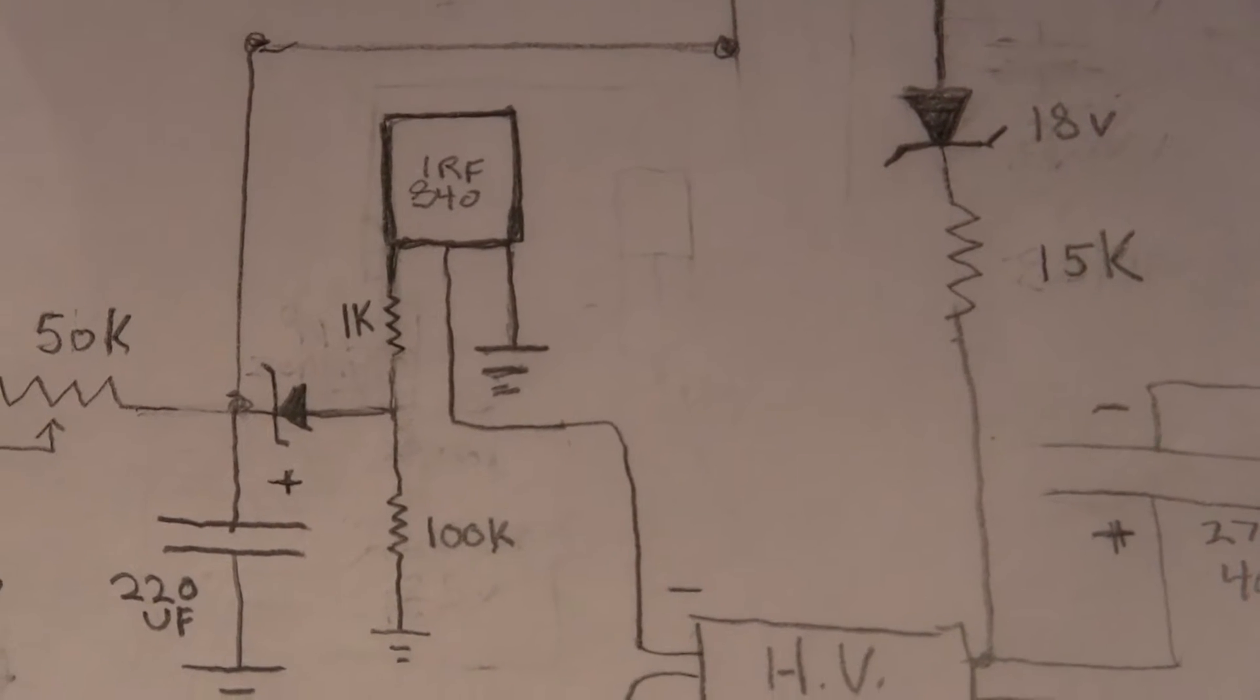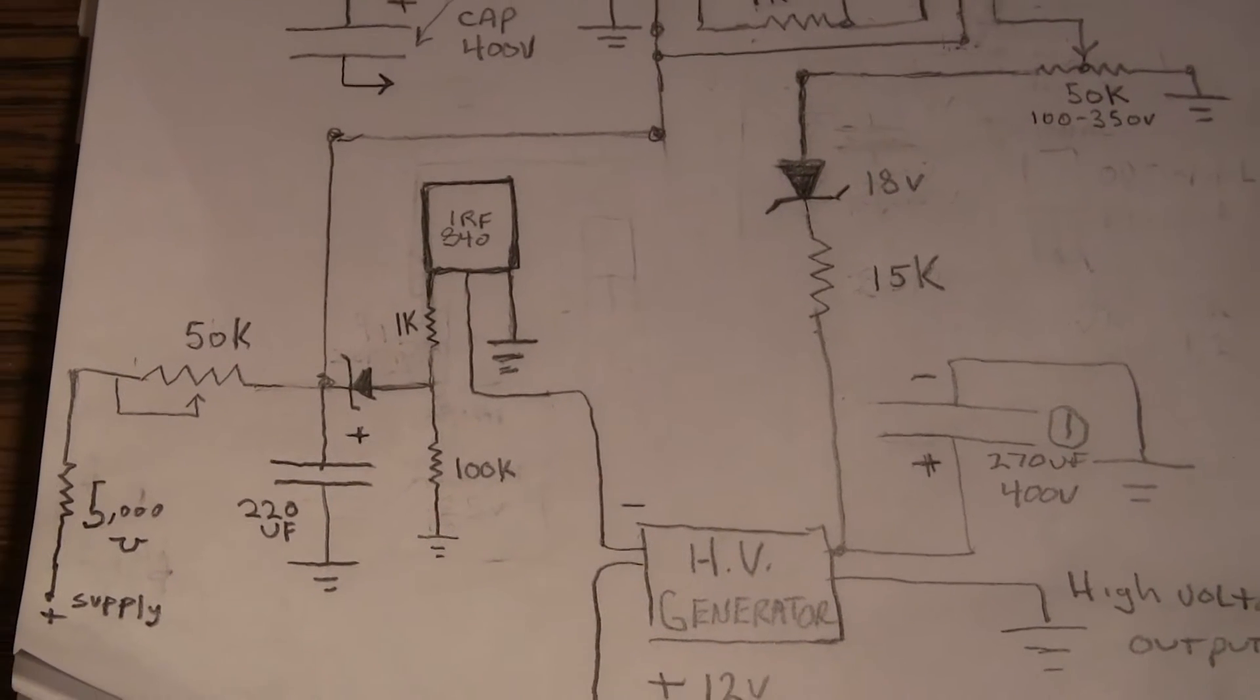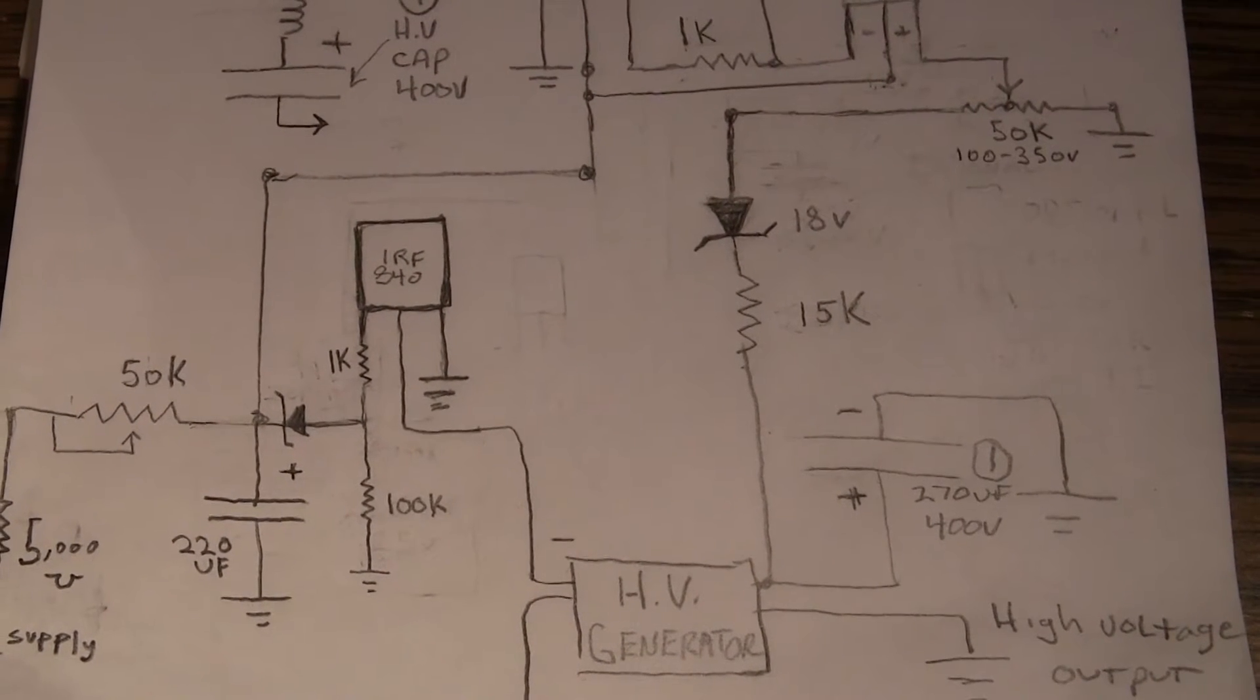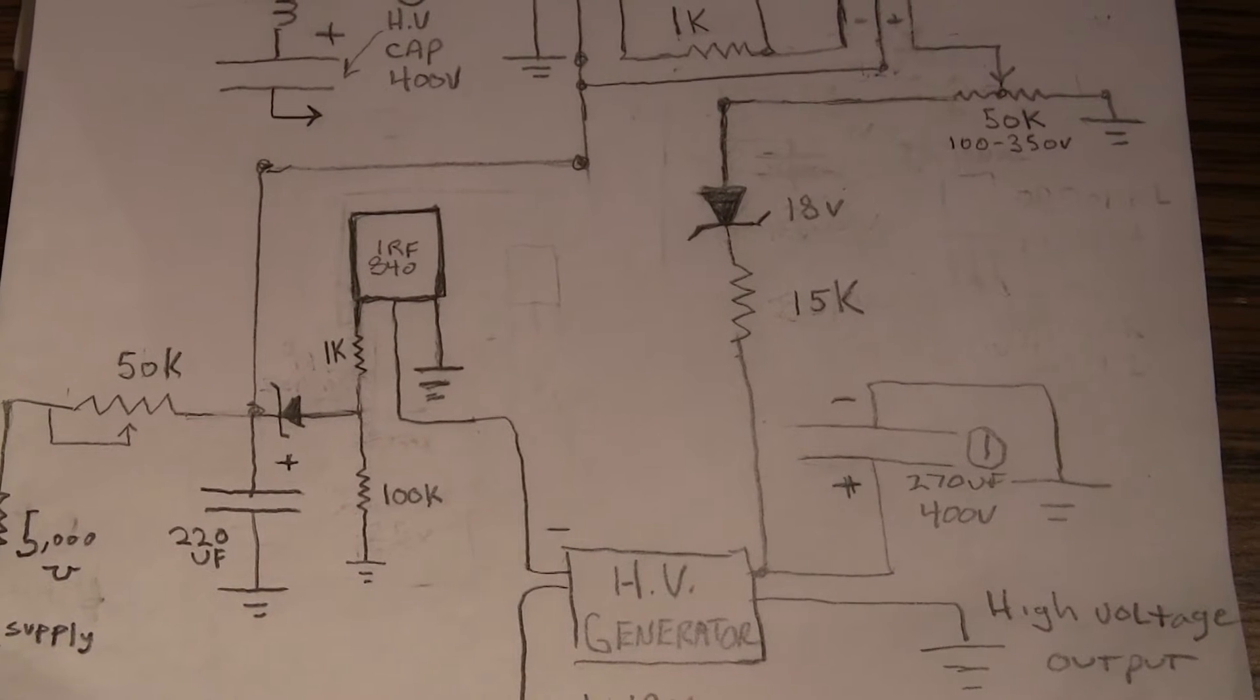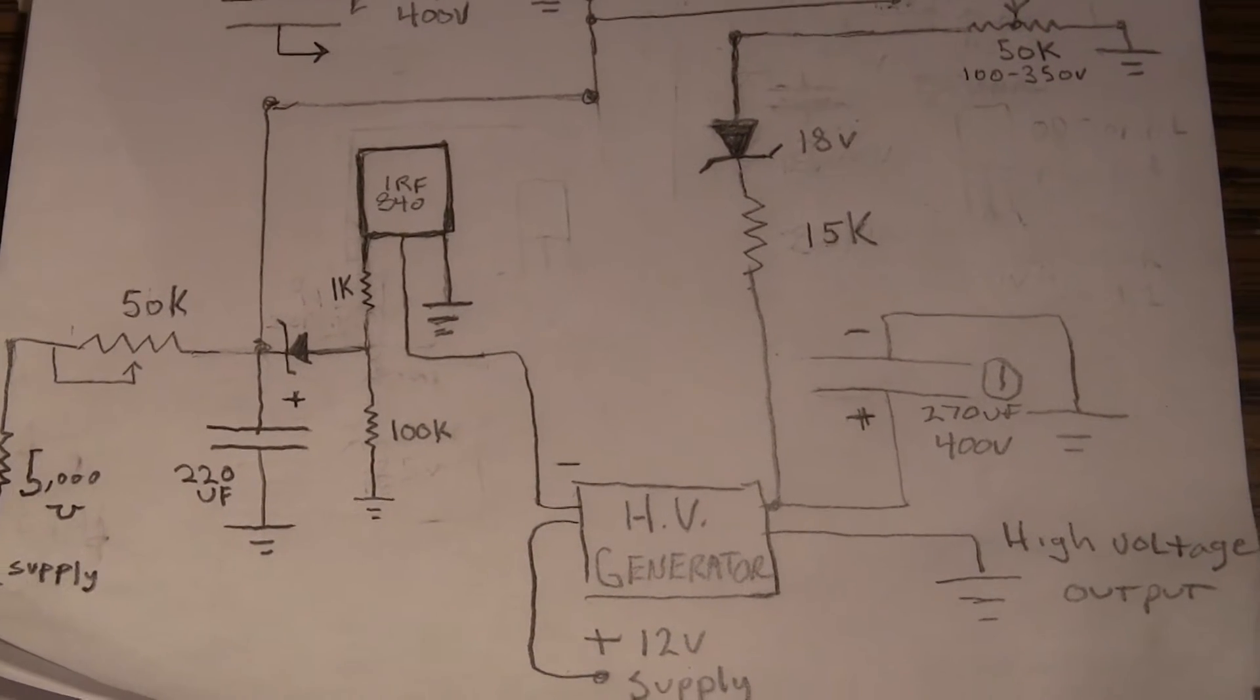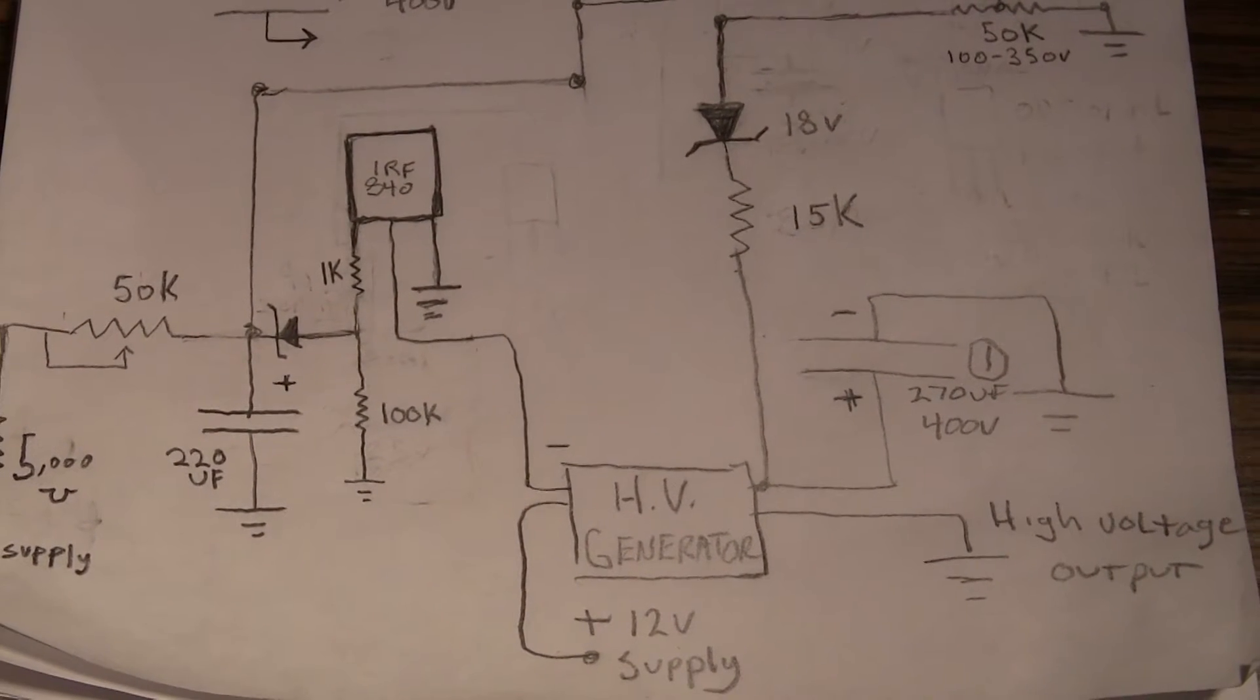A transistor would not work the same way in this circuit. It would work but wouldn't have the sharp turn on. You want the MOSFET to turn on very quickly, and that eliminates heating. If you just slowly ramp something up and try to push a lot of current through it, it's going to generate a lot of heat, which you don't want to do.